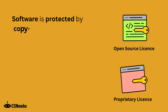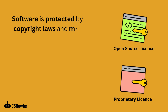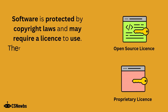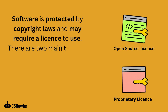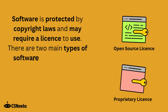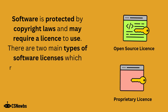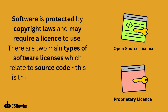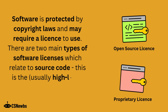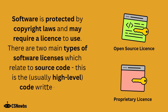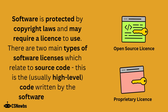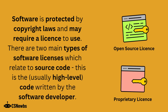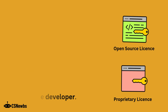Software is protected by copyright laws and may require a license to use. There are two main types of software licenses which relate to source code — the high-level code written by the software developer. The two license types are open source license and proprietary license.